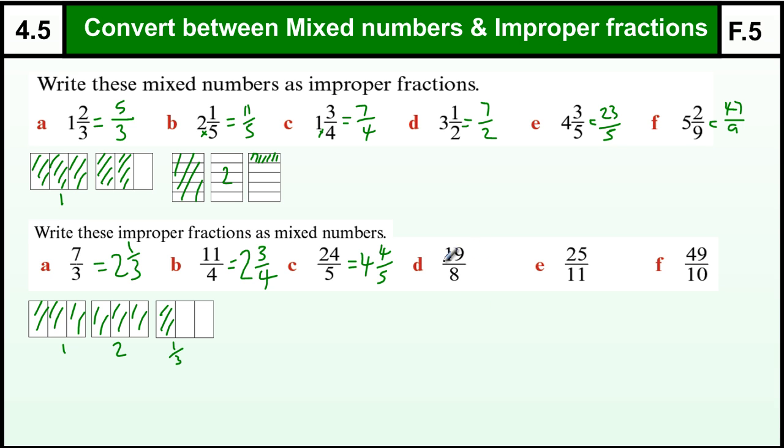If I divide 19 up into 8's, I have got 8 and another 8 is 16, so that is 2 eights of 16 and 3/8 left over. And we have got 2 lots of 11's, 22 and 3 left over. And we have got 4 lots of 10 is 40 and 9 left over.